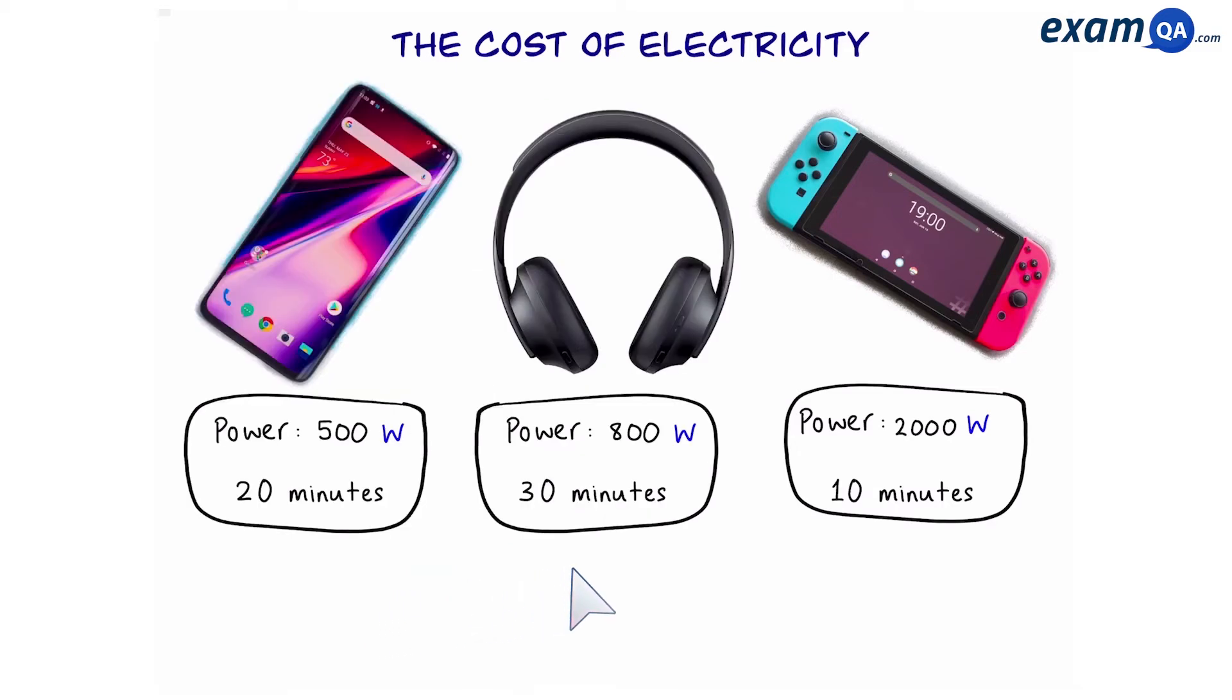From the three devices we can see that the headphones use the most amount of energy for that given time. How about if they all were used for the same amount of time? Let's say all three devices were used for 30 minutes. Now I'm going to tell you a trick. When you have different devices with different power ratings but they're used for the same amount of time, to work out which one has used the most energy all you have to do is look at the one with the highest power rating. So in this case the games console for 30 minutes will use up more energy than the phone or the headphones for 30 minutes.